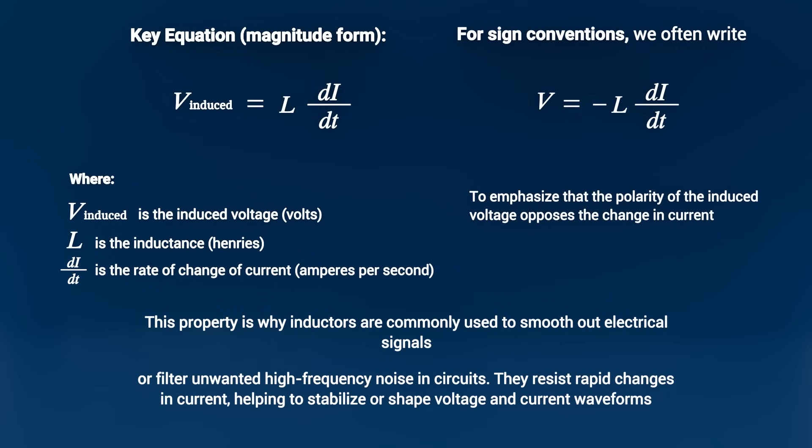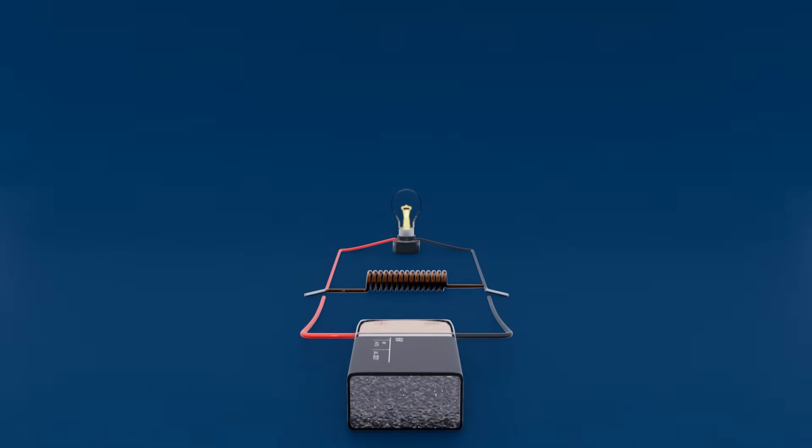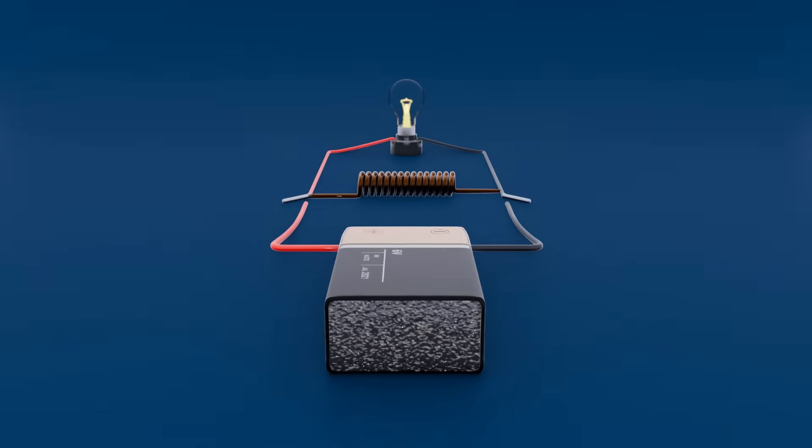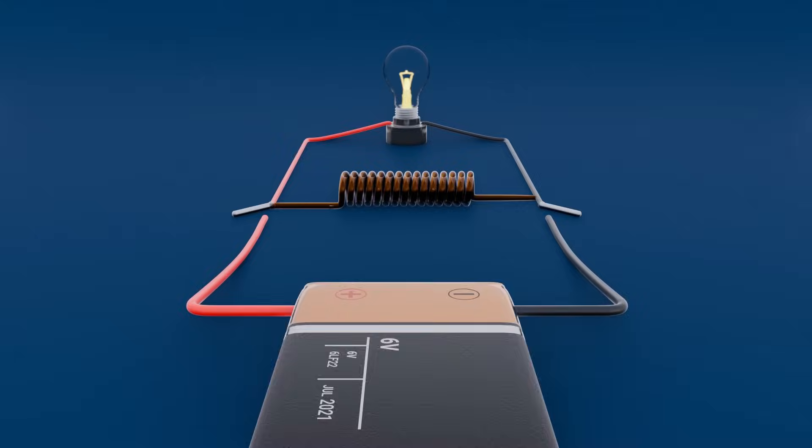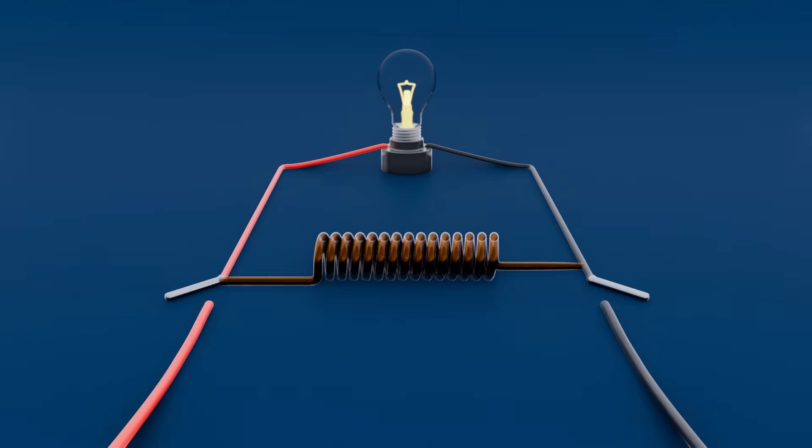They resist rapid changes in current, helping to stabilize or shape voltage and current waveforms. We can visualize the way an inductor works by looking at an inductor in a circuit parallel to a lamp, which can act as a resistive load.